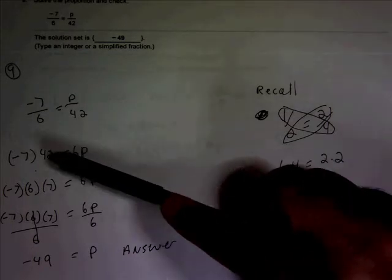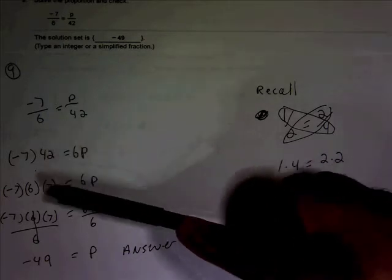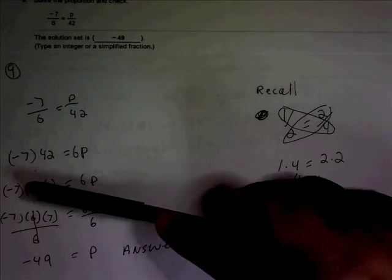Notice I keep it in a factored form because I may have to pull it apart. I know that 42 is 6 times 7, so I'll go ahead and write it out.